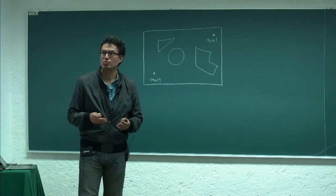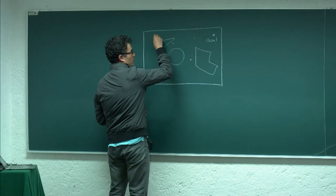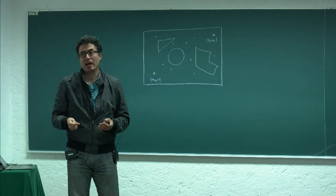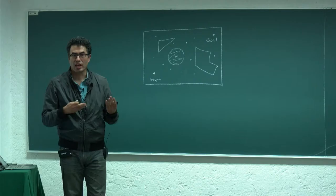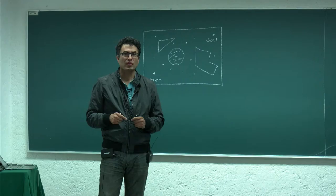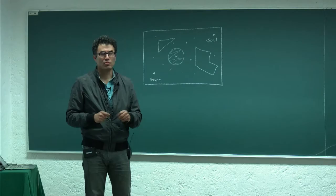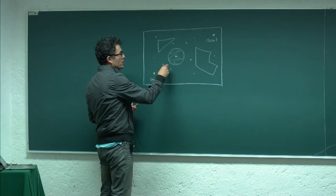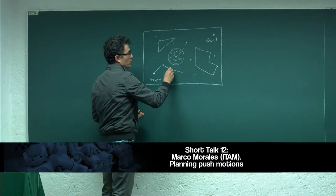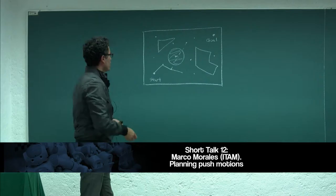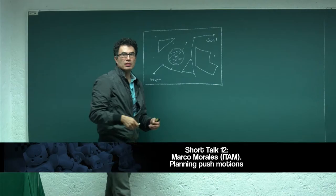Sampling-based motion planning consists of sampling configurations according to some distribution — for example, uniformly — then discarding all samples that are invalid, such as those inside an obstacle. The samples that remain satisfy the free property, which is simple to test using geometric techniques. We then try to identify pairs of configurations and connect them; some connect easily, others don't due to collisions. At the end we have what we call a roadmap.